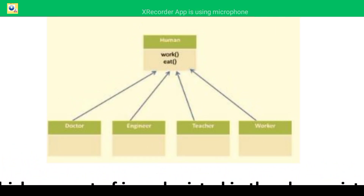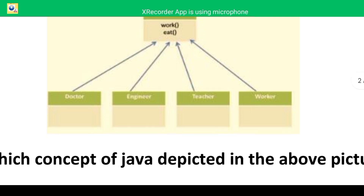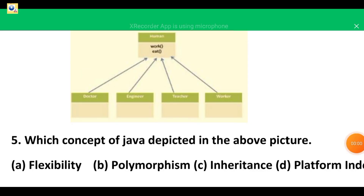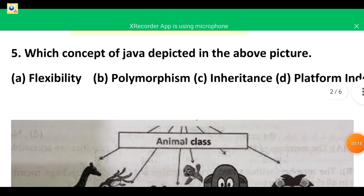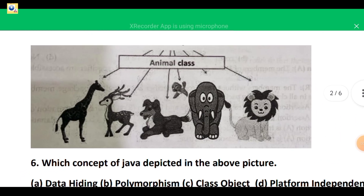Let's see the fourth question. There is a Human class and several other classes: Doctor, Engineer, Teacher, and Worker, all pointing towards the top class Human. Human plays the role of the base class, and Doctor, Engineer, Teacher, and Worker play the role of derived classes. So once again the feature depicted is inheritance.